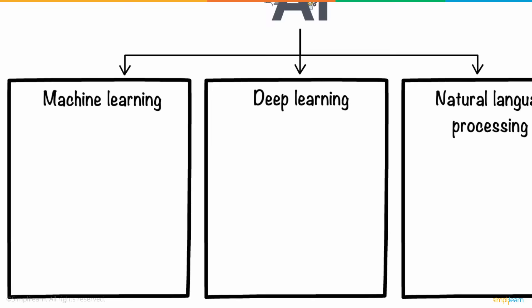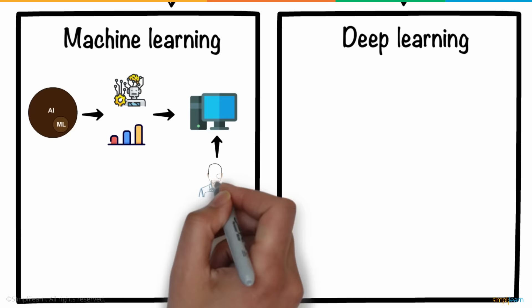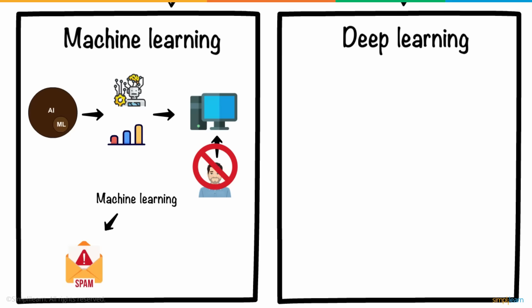Machine learning, a subset of AI, is the process of automating and enhancing how computers learn from their experiences without human help. Machine learning can be used in email spam detection, medical diagnosis, etc.